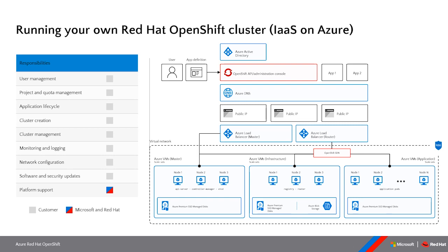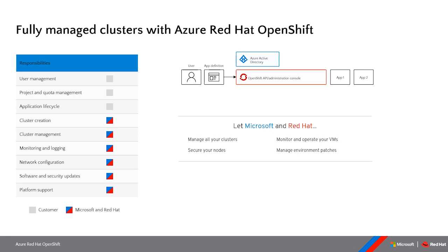With ARO, you're presented with a control plane — a CLI, an API, and a web console — but everything underneath is essentially a black box from your perspective. Microsoft and Red Hat take care of operating the infrastructure, applying security best practices, monitoring and operating the VMs. We're really simplifying the cluster operation experience so you can focus on building, deploying, and scaling your applications.